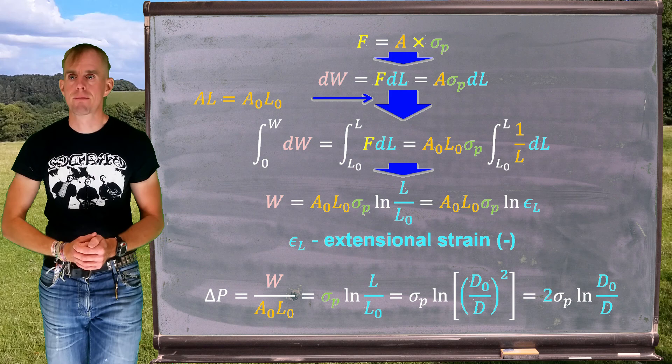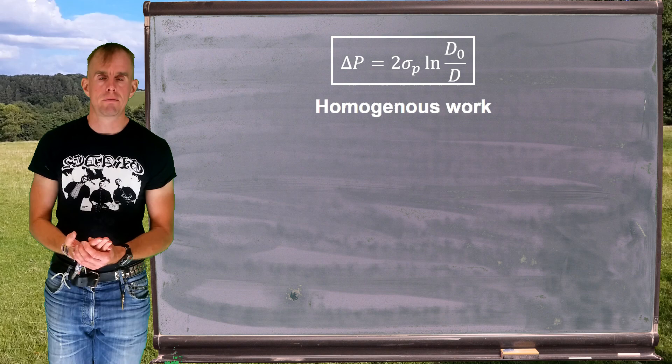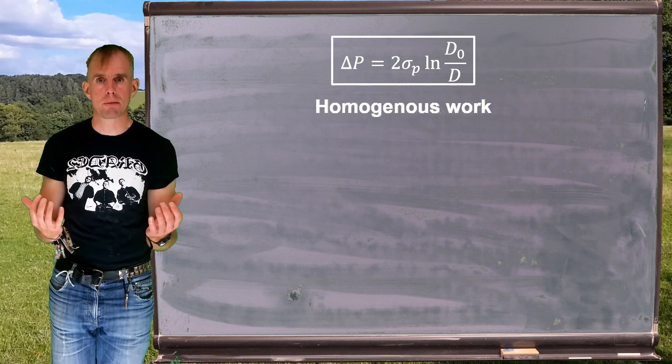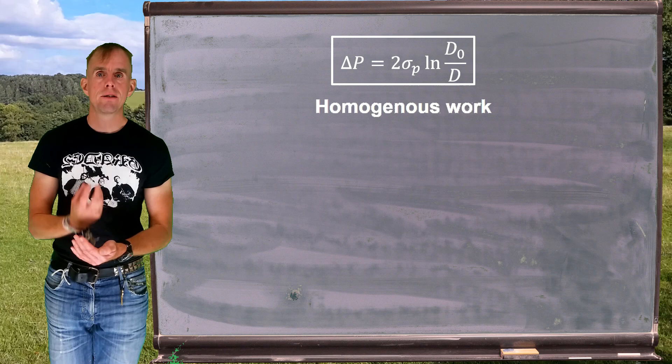Now, remember this analysis is for a perfectly plastic material. The only stress required to drive this material to deform is the yield stress, but we can see that there is an amount of work required to change the shape of this material. That's the amount of work that we've just derived, that pressure, and this is something we call homogeneous work. This is the internal resistance to shape change for a perfectly plastic material.